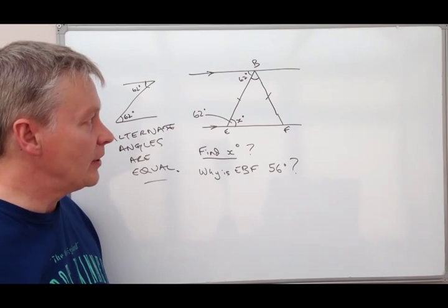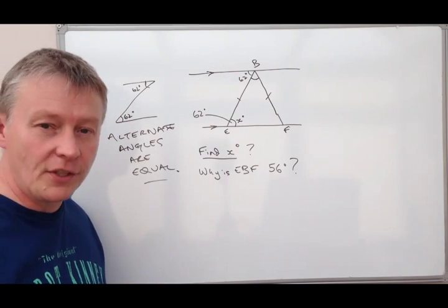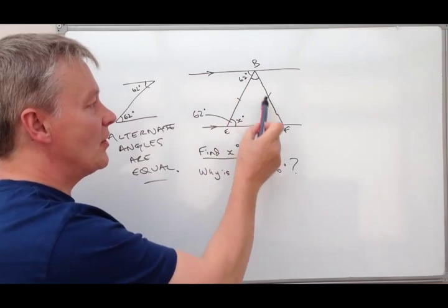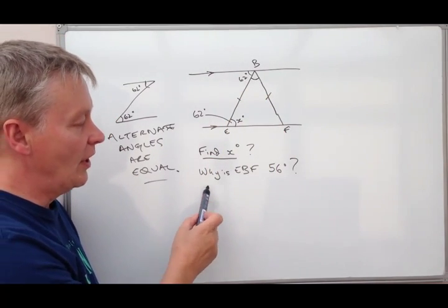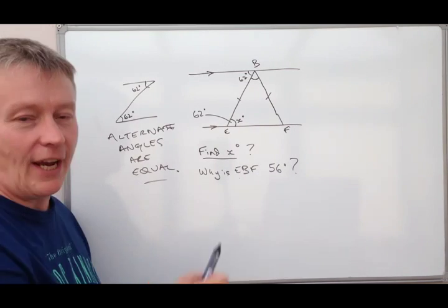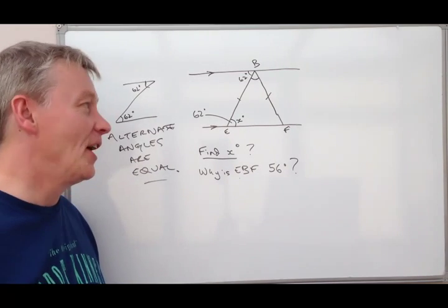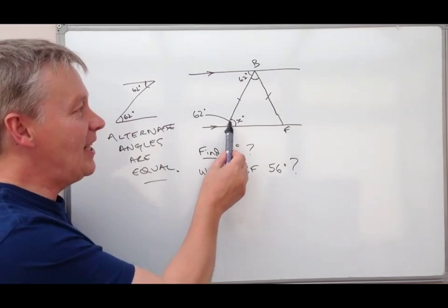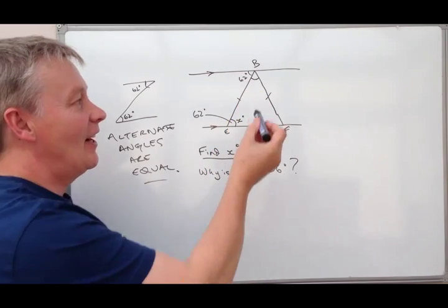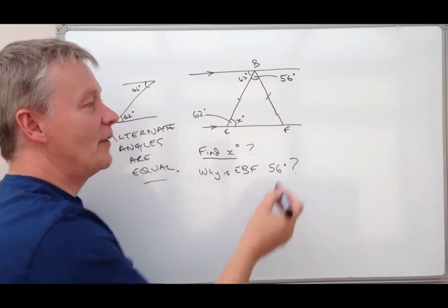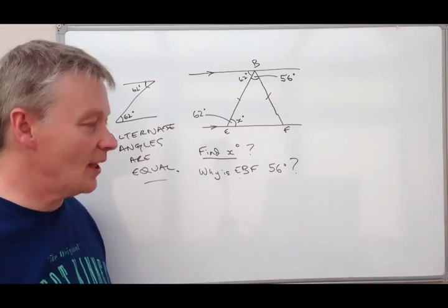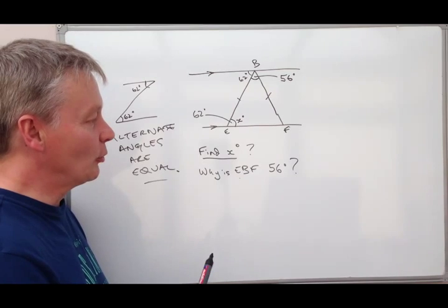The other thing that they use very typically in these sorts of questions is also an isosceles triangle. And you can see here that they want to find out why EBF is 56 degrees. EBF. So basically they mean this angle here is 56 degrees.